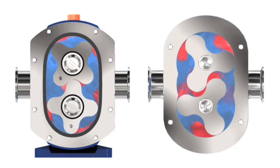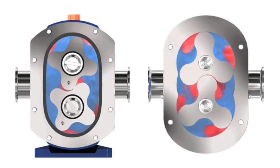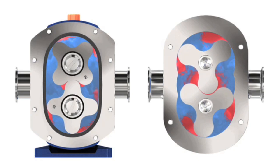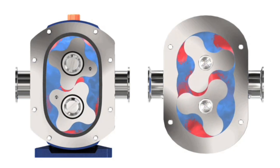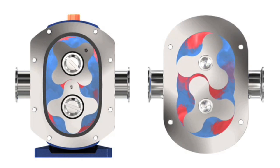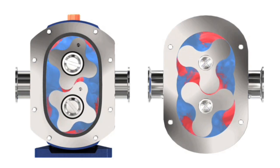the SX incorporates close clearances to minimize product slip. The forelobe geometry reduces shear of the liquid as it enters and exits the lobe cavity, and also reduces pulsation. It's perfectly suited for both cleaning in place and sterilization in place.